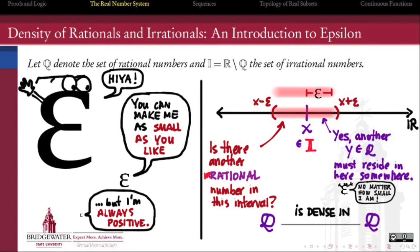The same is also true of the irrational numbers within themselves. And also, there is a rational within an epsilon's reach of any irrational and vice versa. So both Q, the rational numbers, and I, the irrational numbers, are dense both in themselves and in one another.